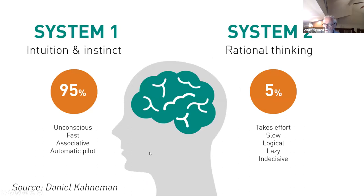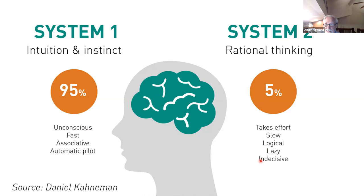System 1 is based upon intuition and instinct, not thinking — it's unconscious, super fast, associative, combining symbols and images, and on automatic pilot. System 2 is rational thinking, and that comprises — according to Kahneman and other psychologists — only 5% of your thinking. It takes effort. It's slow, logical, lazy, and indecisive. People don't like to think. If it were decisive, we never would have survived, because it's slow — your unconscious intuition and instinct are quick and get you out of danger.